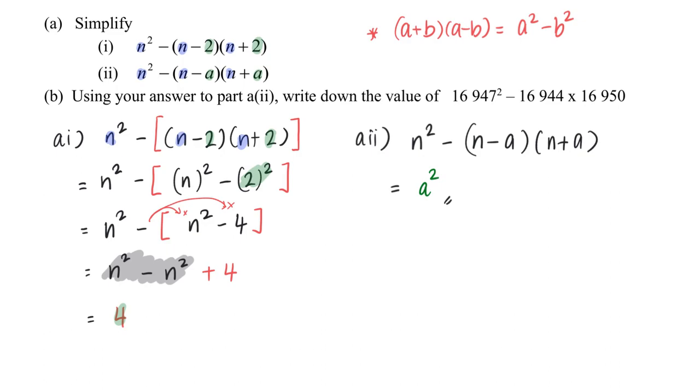And now we are going to make use of this result for part b, where I will have 16947² - 16944 × 16950. From here I could see the similarity already. I know what number is my n already.